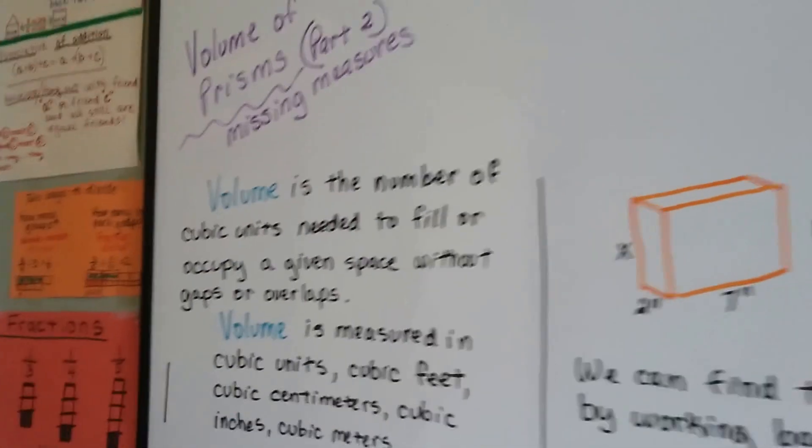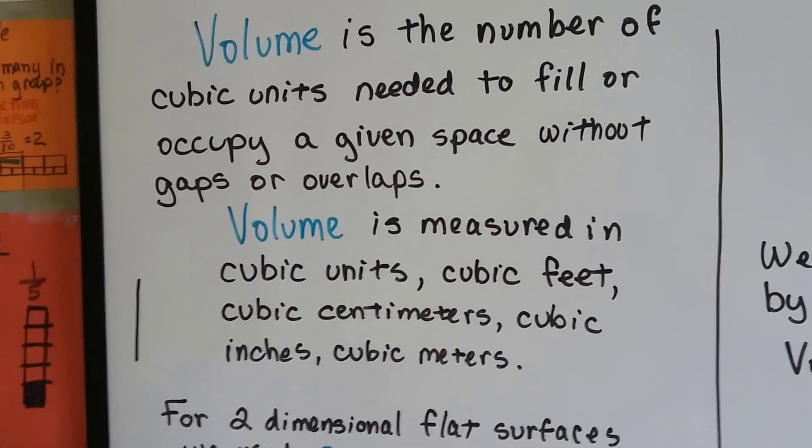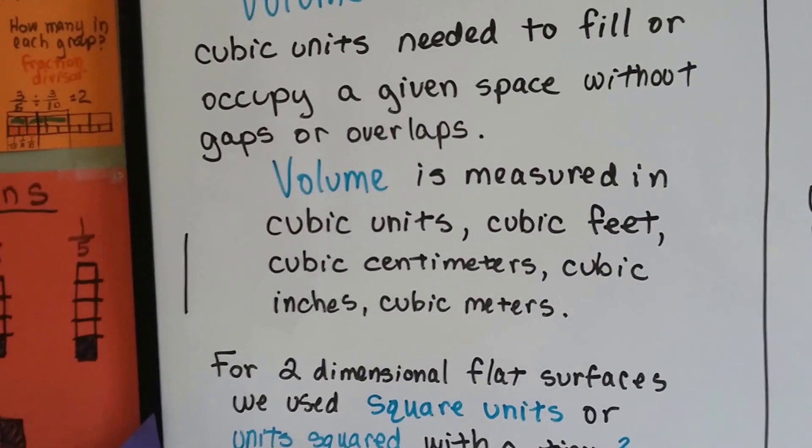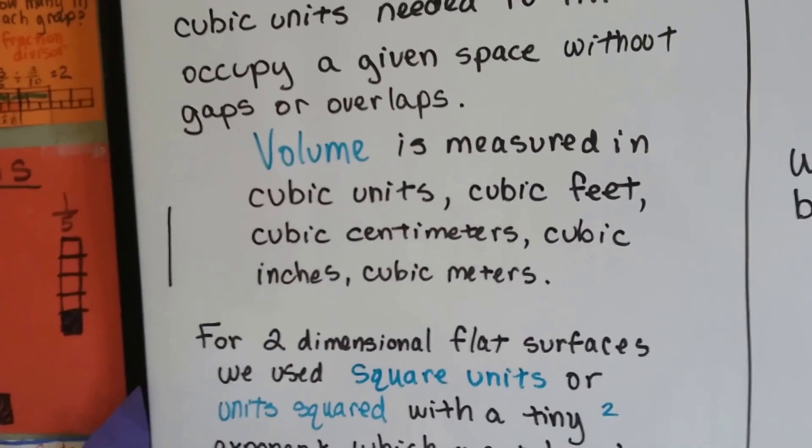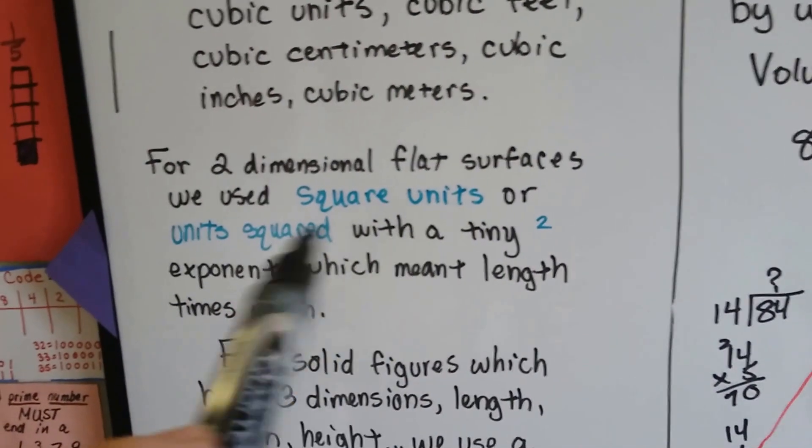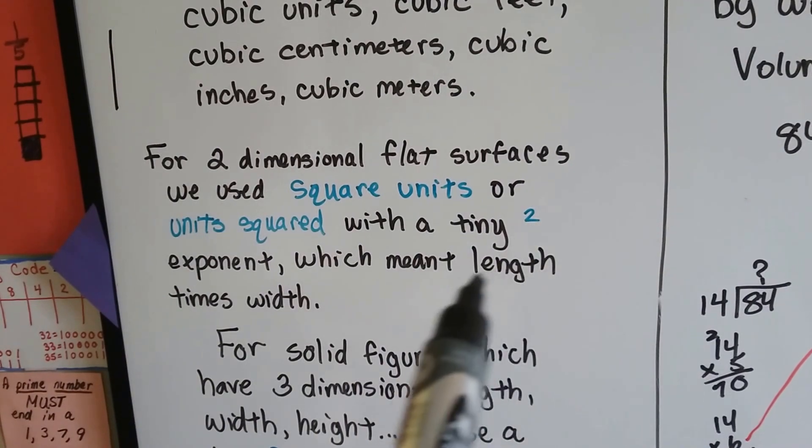If you remember from the last video, volume is the number of cubic units needed to fill or occupy a given space without gaps or overlaps. It's measured in cubic units: feet, centimeters, cubic inches, etc. We used square units for flat surfaces or units squared with a little 2 exponent, which meant the two measures length and width.